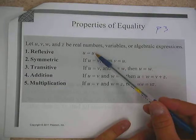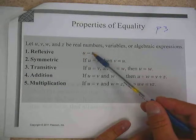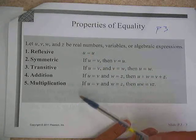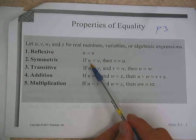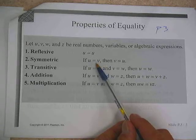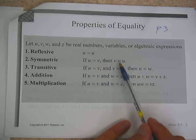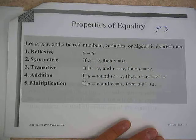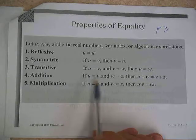The reflexive property tells us that if we have the same thing on both sides, that is inequality. The symmetric property tells us that if we have u on the left and v on the right, that's the same as having v on the left and u on the right. Switching the sides doesn't change anything.